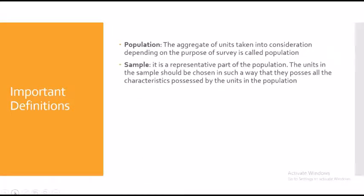The sample of a population will have all the characteristics of the population — it is a representative part of the population. The units in the sample should be chosen in such a way that they possess all the characteristics possessed by the units in the population. So if the students of the college form your population, then whether you pick a particular class or randomly select 30 to 40 students, those students should possess the characteristics of the population.